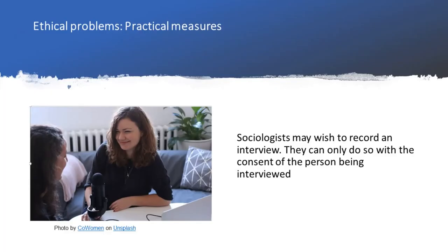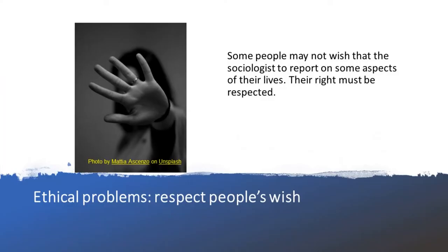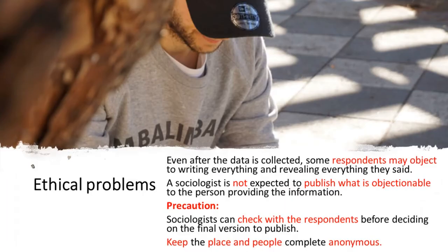There are certain practical measures that sociologists can take. For instance, if they would wish to record an interview, they should get the consent of the people being interviewed. Some people may talk freely to the researcher, but they would not wish some information to be revealed on certain aspects of their life. The researcher should respect these demands. If she does not do so, she may run the risk of people refusing to participate in her research if she is known to have breached the trust of respondents in the past.